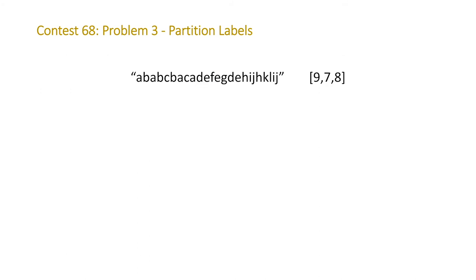The example that LeetCode gave us was a string with characters A through L, and the answer is 9, 7, 8. So we can split this string into three partitions. If we color-code these partitions, you can see what the problem is asking. For a given partition, it has to contain all of the instances of a character. In the first partition, it starts with A, so every A within string S has to be in that first partition. That's going to motivate and inform our algorithm.